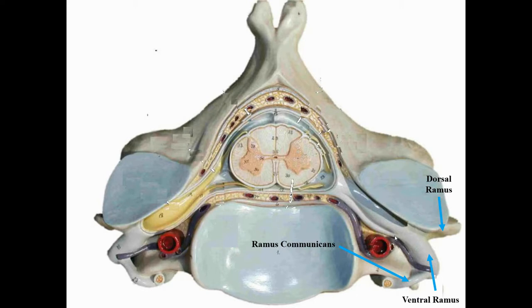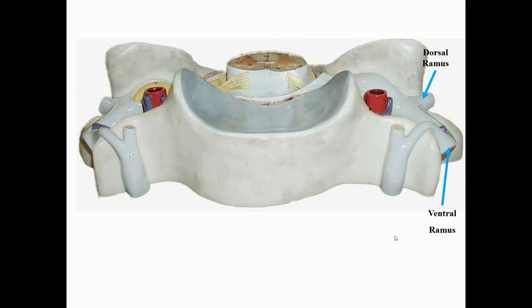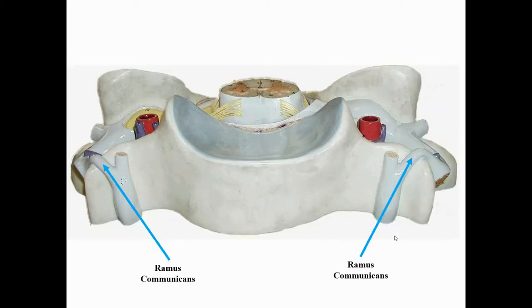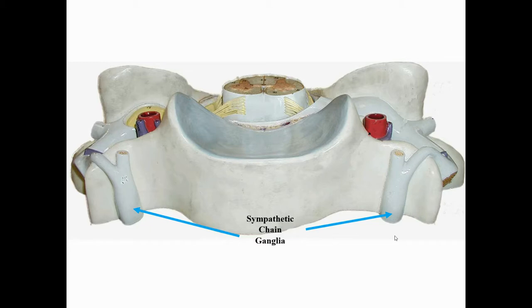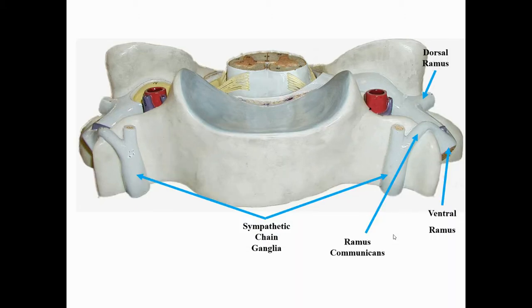On the ventral ramus, something not present on the dorsal ramus is a little bridge — a branch that communicates — called the ramus communicans. Viewed from another direction you can see the two rami and the ramus communicans. It allows the nerve to communicate with structures called sympathetic chain ganglia — these are ganglia with cell bodies running in a chain up and down each side of the spinal cord. We'll discuss sympathetic chain ganglia when we cover the autonomic nervous system. That concludes the cross section of the spinal cord.